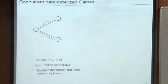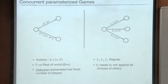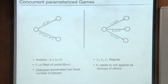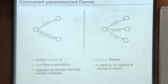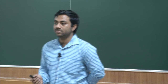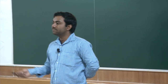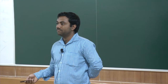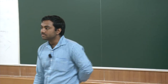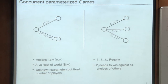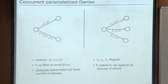In our main model, transitions are labeled with regular languages. Based on the choices made, depending on which language the resulting word belongs to, the game proceeds to the next vertex. We say that player 1 wins if he can win against every number of opponents and every choice of opponents.